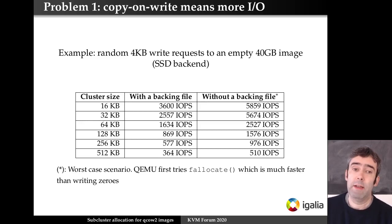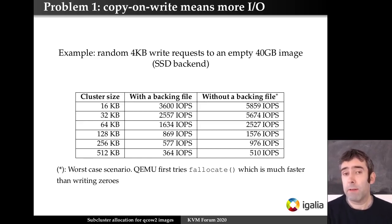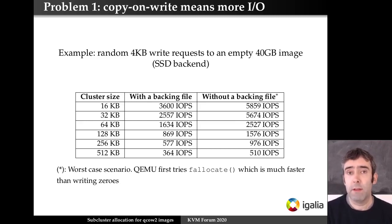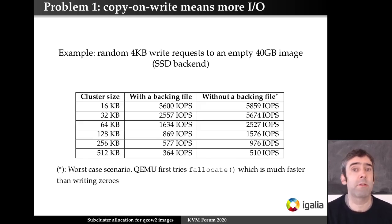As you can imagine, when we increase the cluster size, we have to do more copy-on-write, so the performance goes down, as you can see in the table. If you don't have a backing file, QEMU nowadays uses fallocate to try to fill it in a more efficient way. If that works — if the filesystem and OS support it — this is very fast and the cluster size doesn't have any effect. But if that doesn't work, it goes to the slow path of writing actual zeros to disk, and then you can see the numbers in the table.